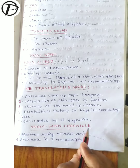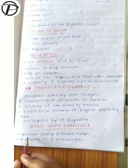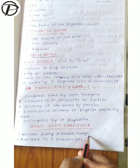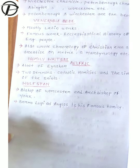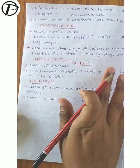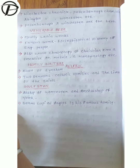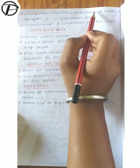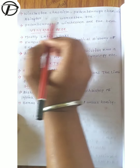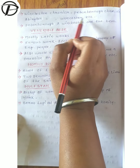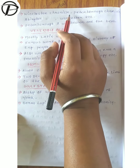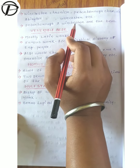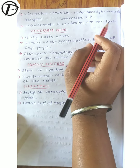Then the Anglo-Saxon Chronicle was maintained during Alfred's reign and is available in seven manuscripts. Some important chronicles are the Winchester Chronicle, Peterborough Chronicle, Abingdon Chronicle, and Worcester Chronicle. The best among them are the Peterborough and Winchester Chronicles.